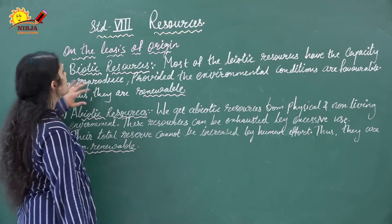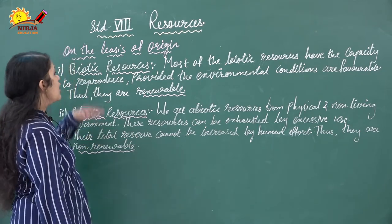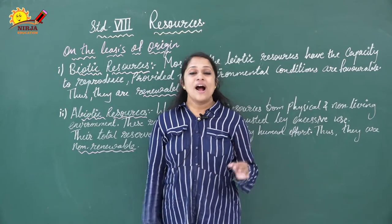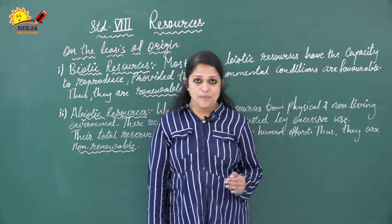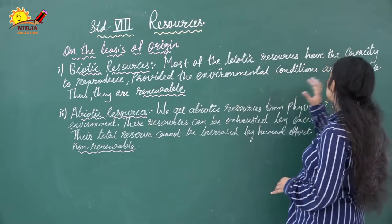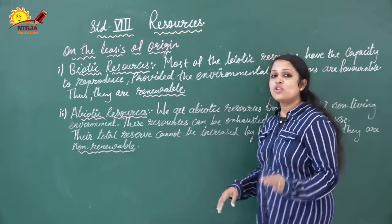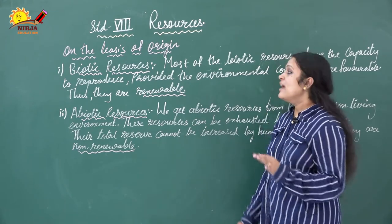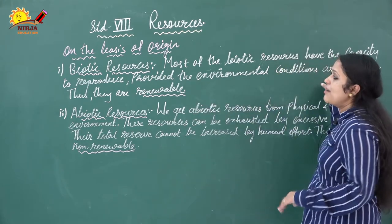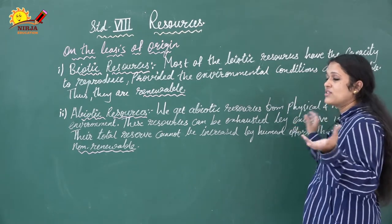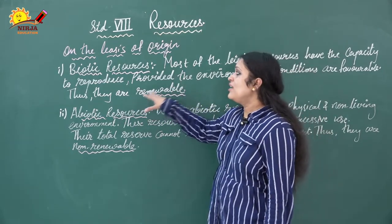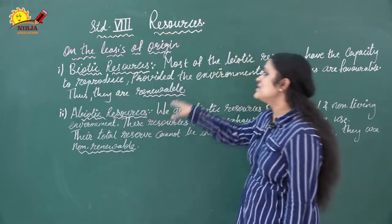On the basis of origin, resources are classified into two categories: biotic resources and abiotic resources. Biotic resources are living things — examples include wild and domestic animals, agricultural crops, and forests. Most biotic resources have the capacity to reproduce, provided environmental conditions are favorable, so they are considered renewable resources.